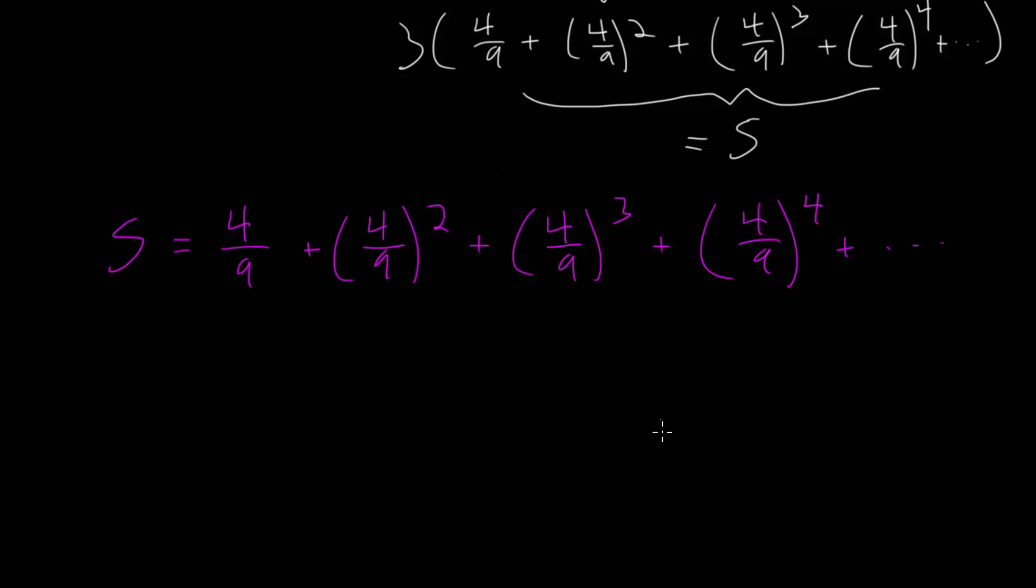The technique for adding up this infinite sum is to multiply each of these terms by the common ratio. We know that the common ratio is 4 ninths, the number we're multiplying by to go from one term to the next. We'll multiply the entire sum by that, which means we're looking at 4 ninths s.